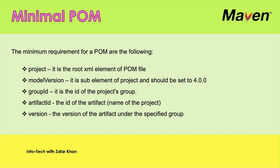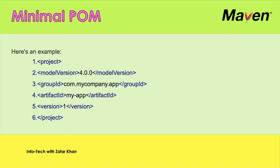Group ID is the ID of the project's group. If you have a project, there should be some groups, and you have to mention the group ID. Artifact ID is nothing but the name of the project. And version is the version of the artifact under the specified group. Here is an example of the pom.xml file: first we write the project element, then model version set to 4.0.0, then group ID — for example, com.mycompany.app — then artifact ID, which is the project name, for example myapp, and the version is 1.